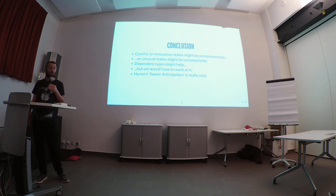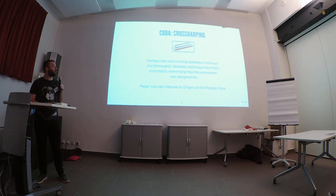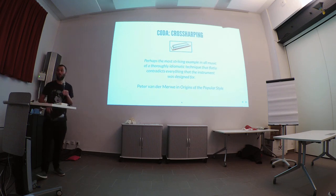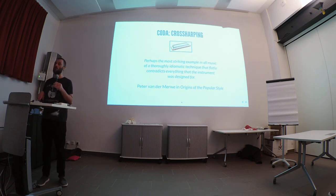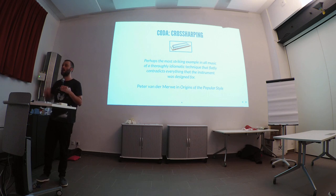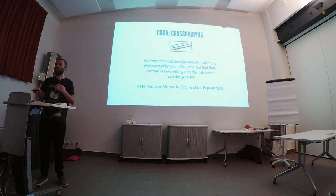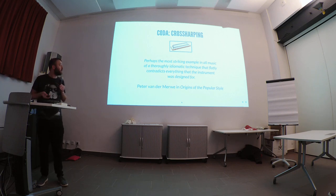In conclusion: be careful that innovative states might be unrepresentable. Dependent types can help in doing this. And if you really want to learn about it, check out Sweet Anticipation. One more coda: we have a tendency to try to impose these type structures on society, and given we're automating more of society, that's quite important. We could end up with more disasters, like having a Boolean column in your database for gender — where you've tried to impose an algebraic structure on a reality that won't admit it.